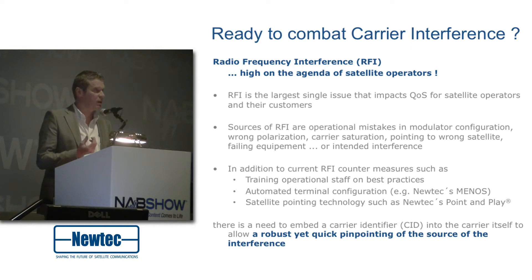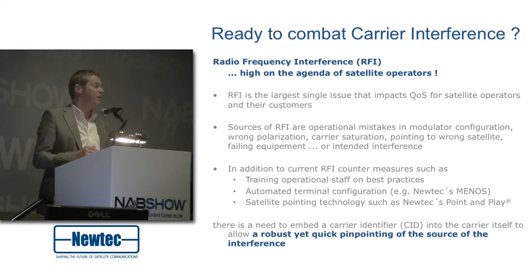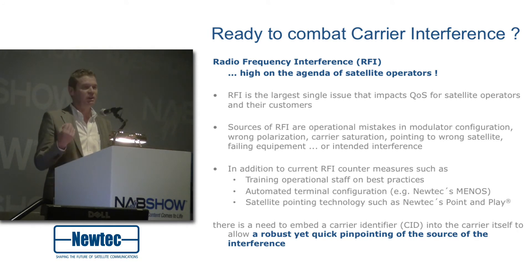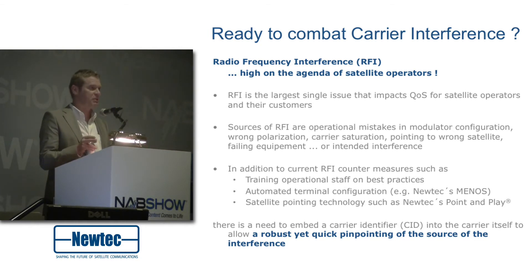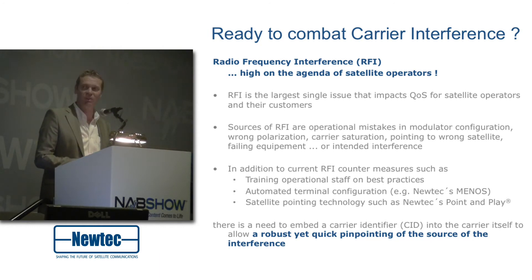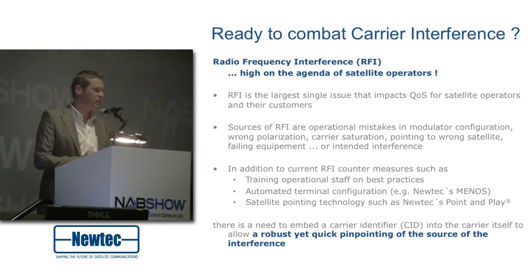If you have an identification in the carrier and something is going wrong — somebody is mispointing on the wrong satellite, the wrong polarization, whatever happens — you can easily identify where the cause of the interference is. So, instead of triangulating and trying to find out many days after where the disturbance is coming from, this carrier ID would, in a couple of minutes, let the satellite operator find out who is causing the interferences.